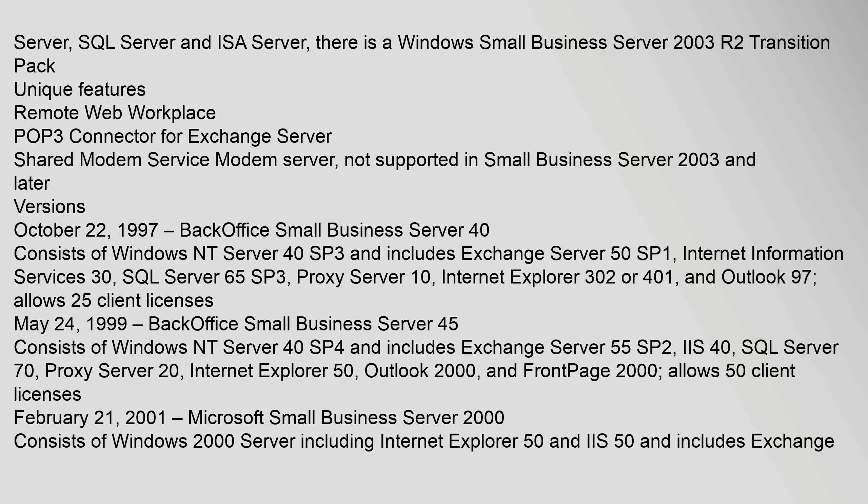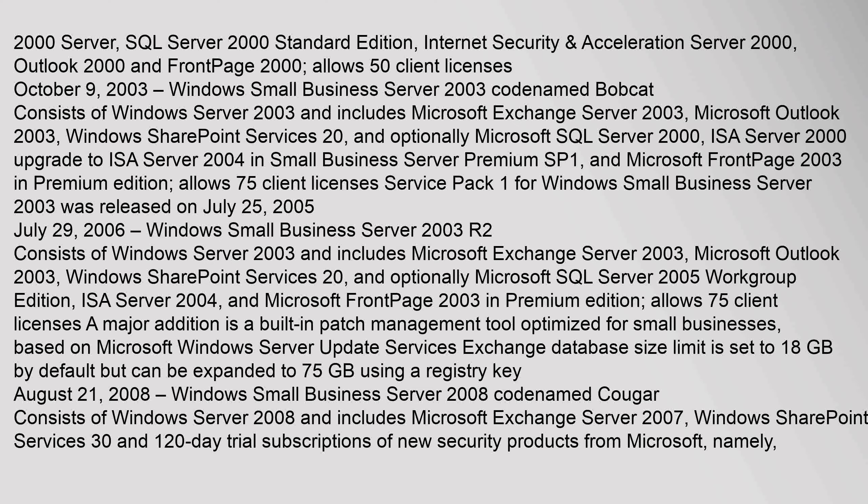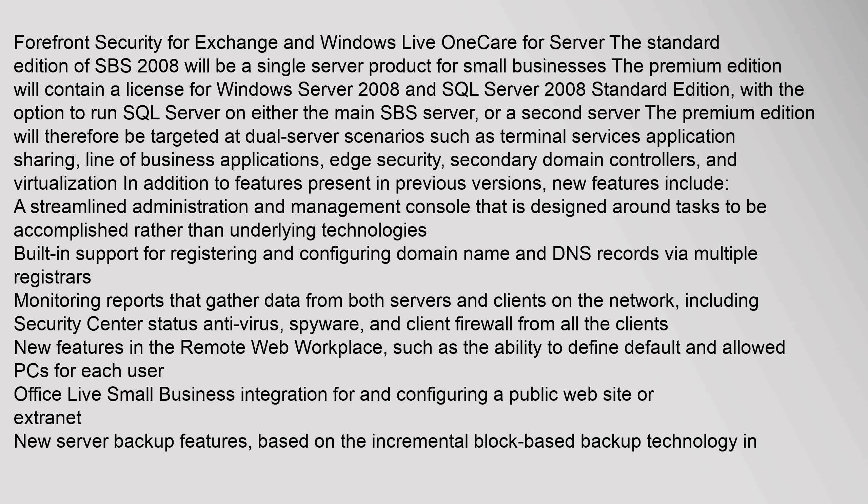February 21, 2001: Microsoft Small Business Server 2000 consists of Windows 2000 Server including Internet Explorer 5.0 and IIS 5.0, and includes Exchange 2000 Server, SQL Server 2000 Standard Edition, Internet Security and Forefront Security for Exchange, and Windows Live OneCare for Server.